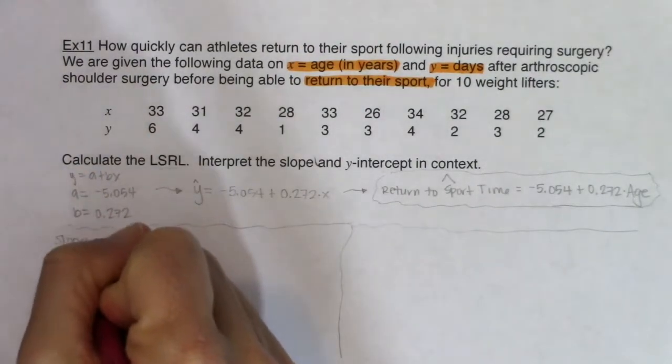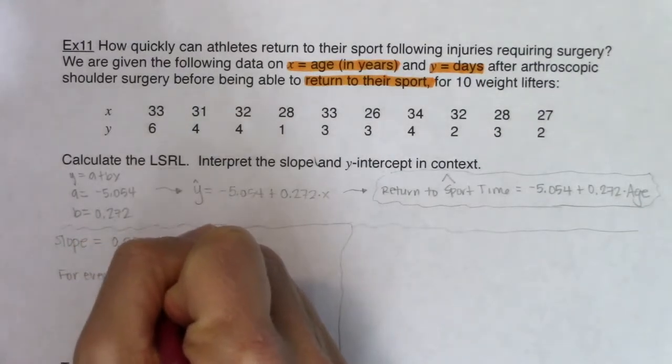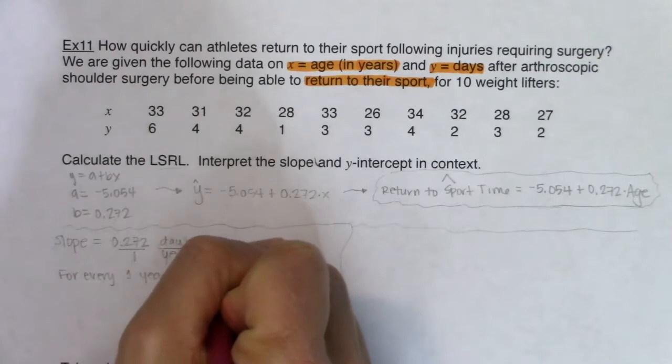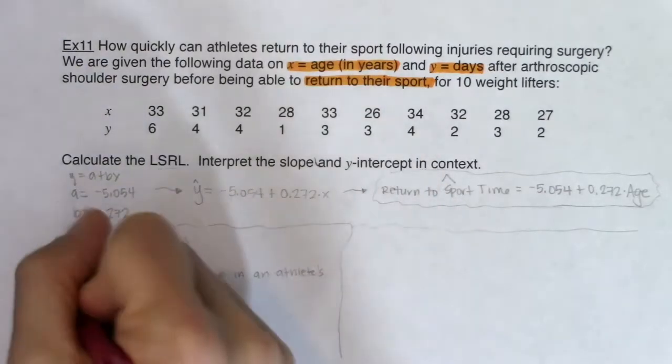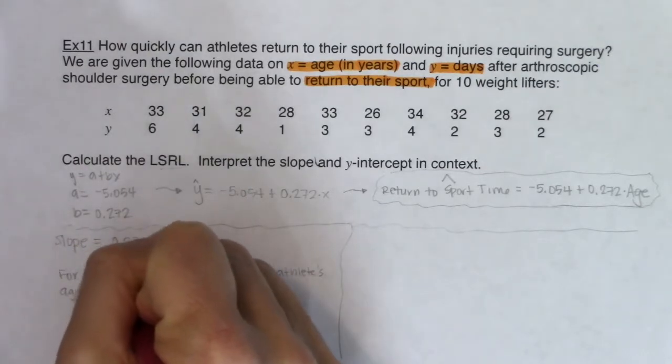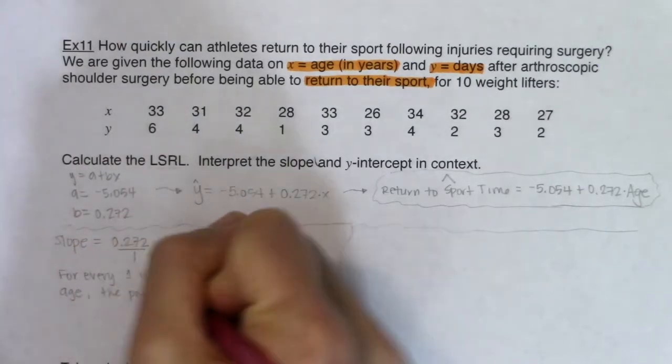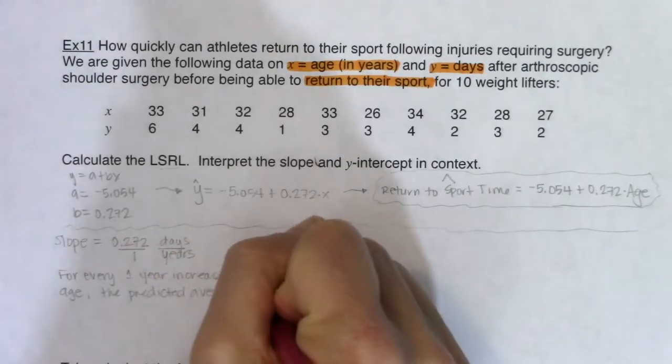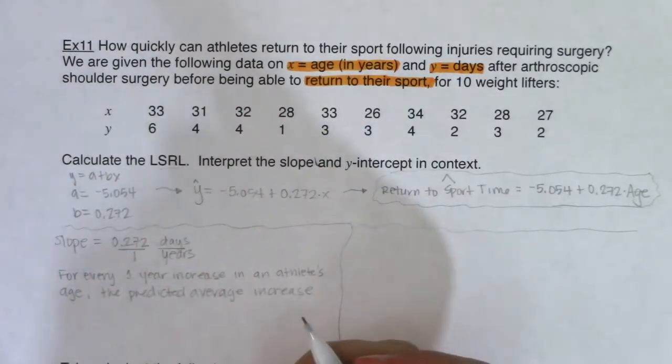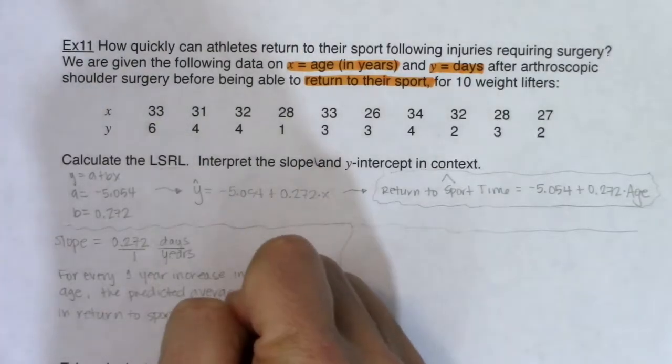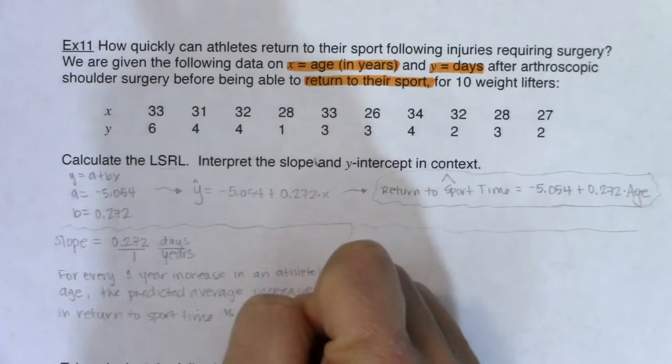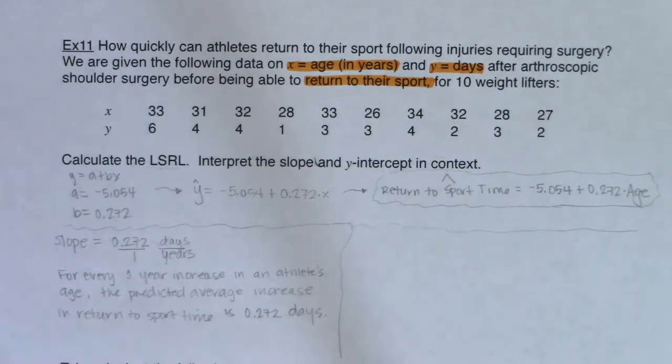So I'm going to write it onto my paper. For every one year increase in an athlete's age, the predicted average increase in return to sport time is 0.272 days. And that's another way of saying the older you get, the longer it takes you to recover from surgery.